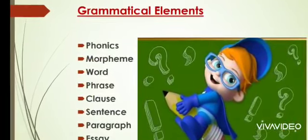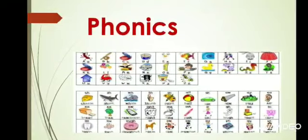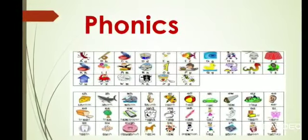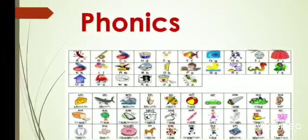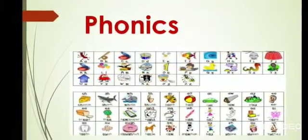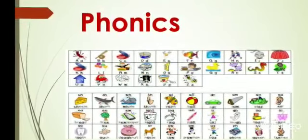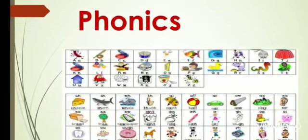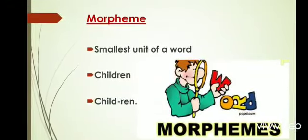First of all, we will look at phonics. I have shown a picture here. Phonics basically deals with sounds. For example, we have a book — these are different phonics, and when we combine different phonics together, they form a morpheme.